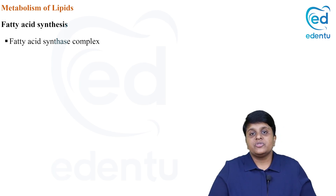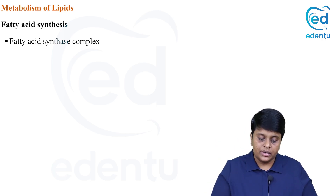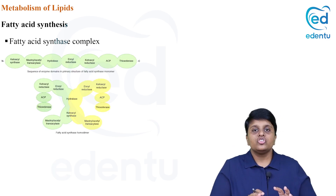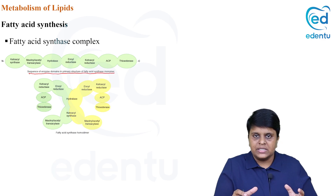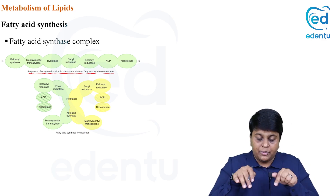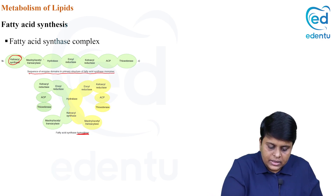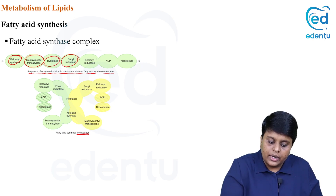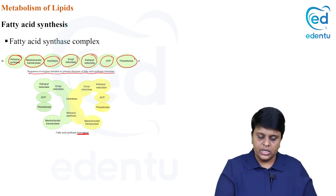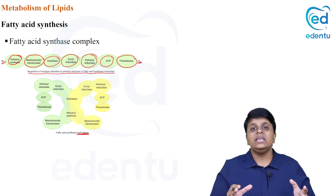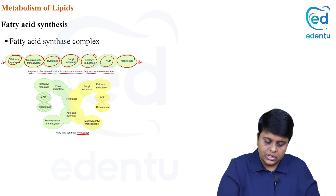Fatty acid synthase is a multi-enzyme complex where one enzyme contains many different enzyme activities. It exists as a homodimer in an X-shaped arrangement. The different enzyme activities within the fatty acid synthase complex are: ketoacyl synthase, malonyl-acetyl-transacylase, hydratase, enoyl-reductase, ketoacyl-reductase, acyl carrier protein, and thioesterase. These are arranged from the amino terminal to the carboxyl end of the protein, and when arranged as a dimer they form an X shape.